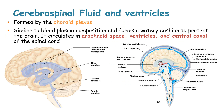The cerebrospinal fluid is formed by the choroid plexus and has a similar composition to blood plasma. It forms a water cushion to protect the brain and circulates in the arachnoid space, the ventricles, and the central canal of the spinal cord. The four ventricles of the brain are the lateral ventricles in the cerebral hemispheres, the third ventricle, the cerebral aqueduct, and the fourth ventricle. The right side image illustrates the flow of cerebrospinal fluid in the arachnoid spaces around the brain surface, the ventricles, and the central canal of the spinal cord.